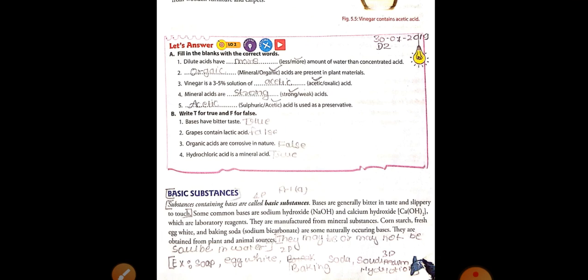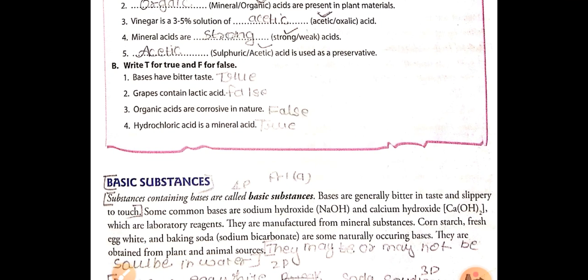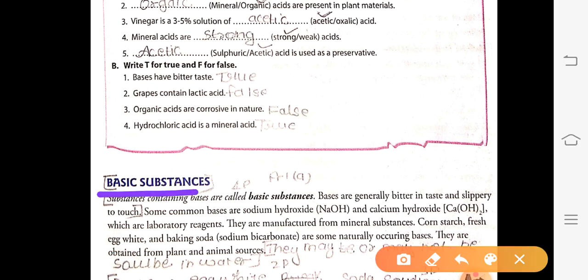We looked at uses of acids like hydrochloric, sulfuric, nitric, and acetic acid, and completed the exercise. Today we will learn about a new topic — basic substances. The substances which contain bases are called basic substances. They are usually bitter in taste and are slippery to touch.